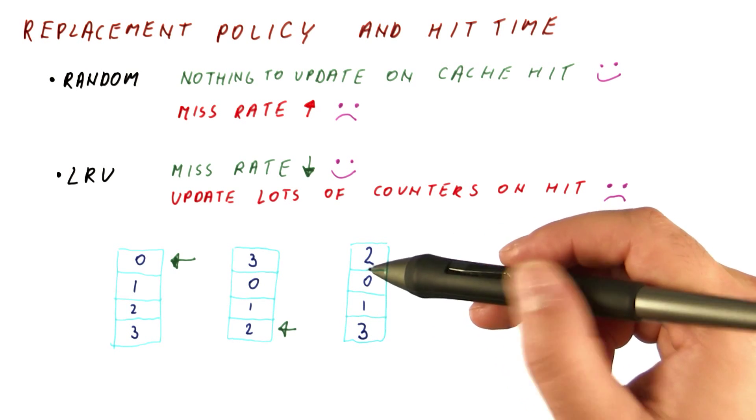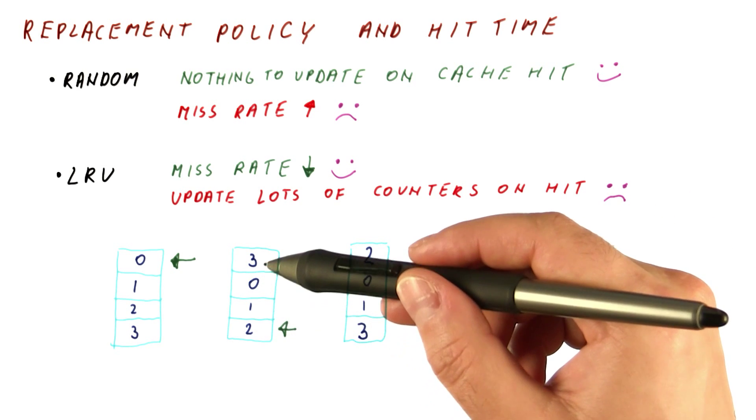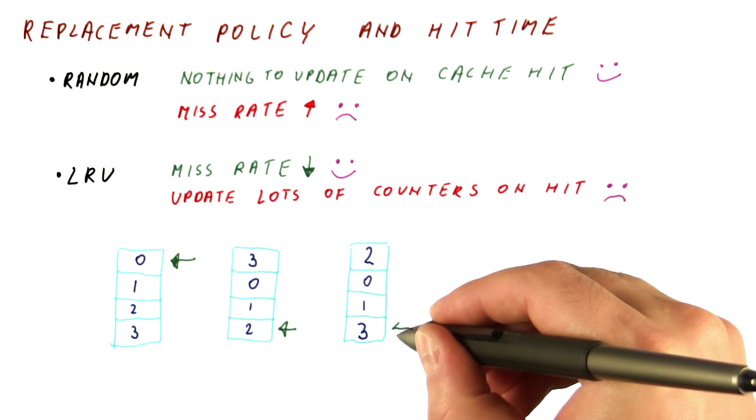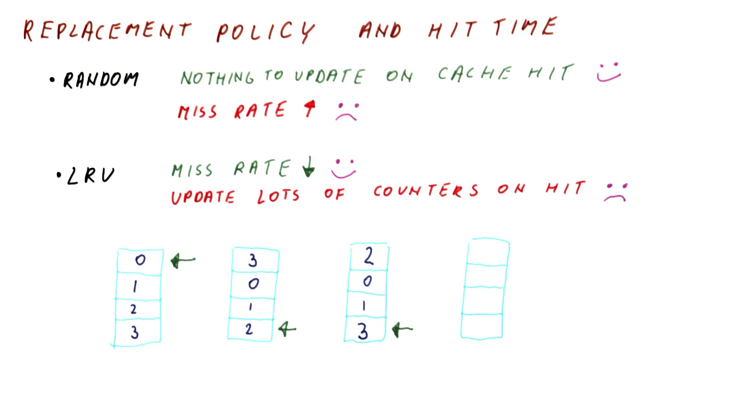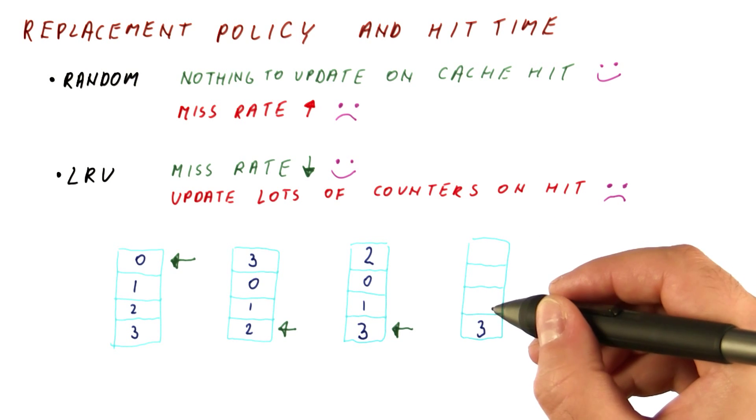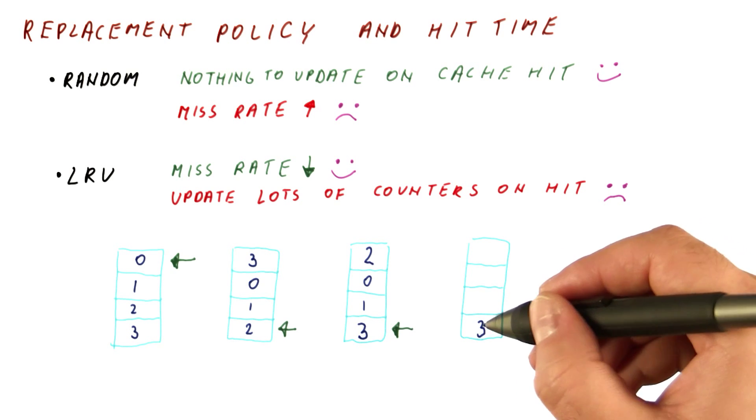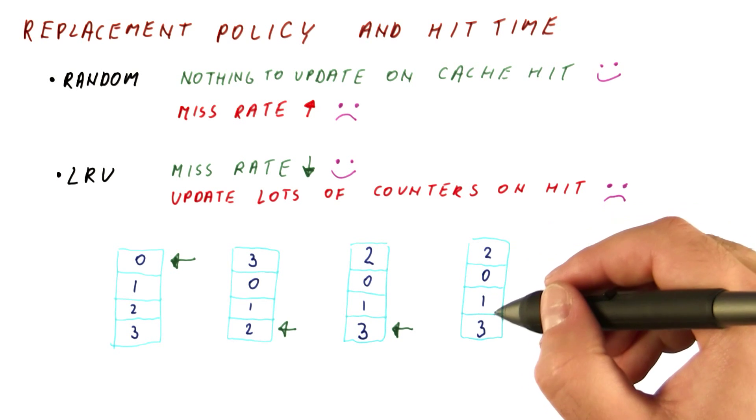But note that even though we have only changed two counters, we have to actually check for each counter whether it's lower than this or not. So even when we access the most recently used block, and the counters don't change at all, because this becomes three, and counters larger than it get decremented, but there is nothing larger.